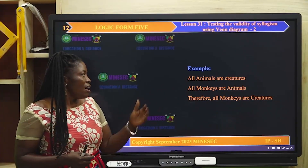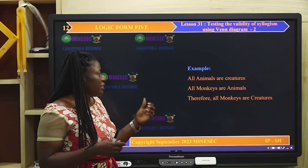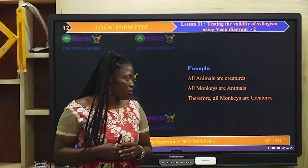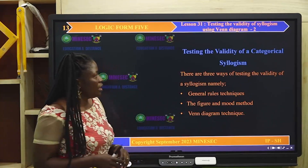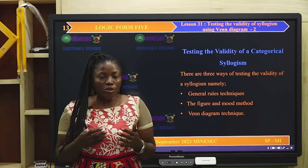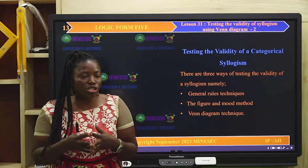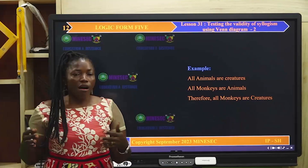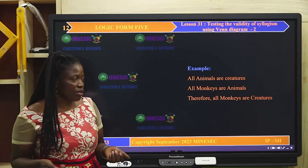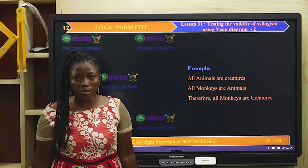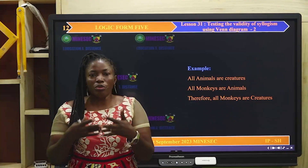To test the validity of a categorical syllogism — like: All animals are creatures, All monkeys are animals, Therefore all monkeys are creatures — in order to test validity using the Venn diagram technique, what are the various procedures to follow? There are three ways of testing validity of an argument: one is the general rule — there are seven general rules; another is the figure and mode method; and now, the Venn diagram technique.